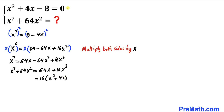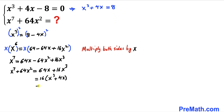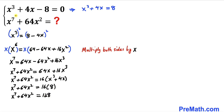Now let's focus on our very first equation. Moving the 8 to the other side, it can be written as x³ + 4x = 8. We can now replace x³ + 4x with 8, so the expression becomes 16 × 8.